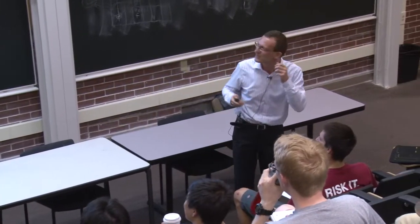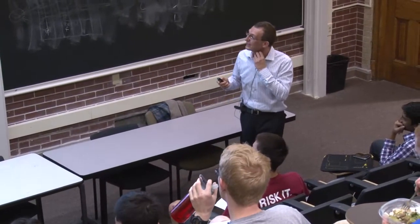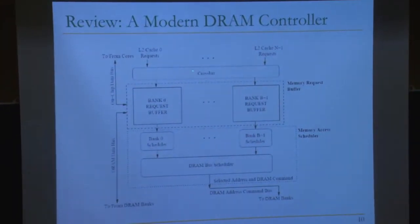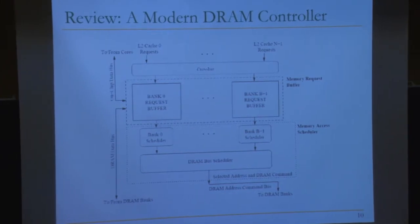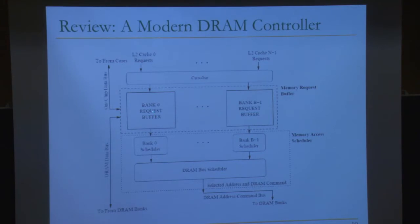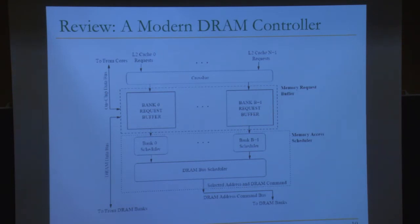This was your recommended reading — some of the papers Bill wrote. Let's jump into the lecture topic: memory interference and scheduling. This is a picture of what a modern DRAM controller looks like. It takes requests from different L2 cache banks, which could be serving different processors. It's normally partitioned into bank request buffers — this is the static versus dynamic partitioning of the buffer space.